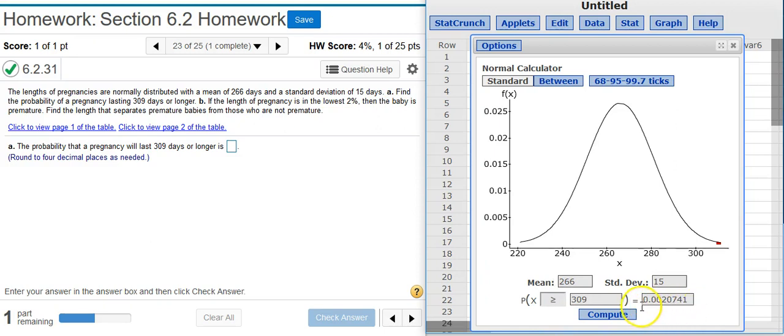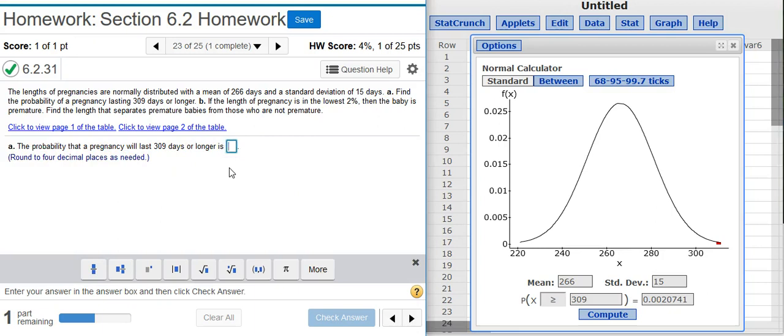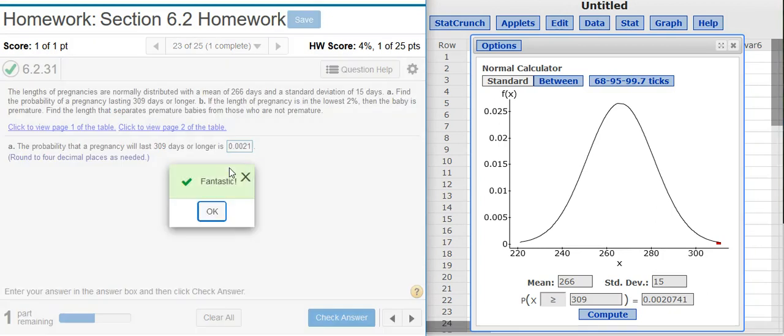And notice here on the other side of the equal sign is my probability. This is a probability in decimal form. I'm asked to round to four decimal places. So I'll just type that in here. Fantastic!